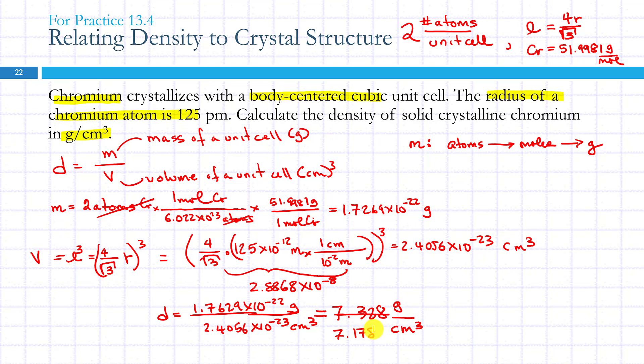7.178 times 10 to the zero, so just 7.178 grams per centimeter cubed. Now I have three significant figures in my picometers here, so I end up with 7.18 grams per centimeter cubed.